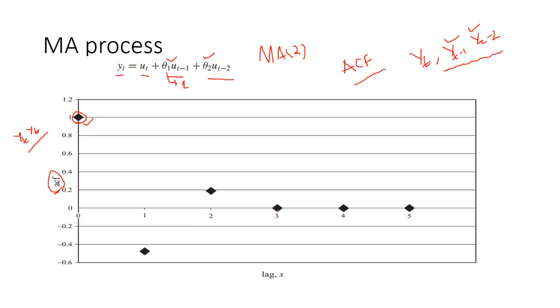For lag 3, the autocorrelation function takes a value of 0. For lag 4, it is 0. For all the lags, we have autocorrelation function equal to 0. So, we consider only till lag 2. Beyond that, it is of no use. So, only lag 1 and lag 2 are used for predicting the future.